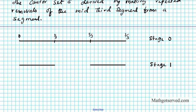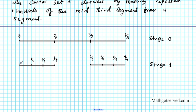Now to get stage 2, we're going to remove the middle third of the segments we got from stage 1. Each segment is 9 units long, so I break it into thirds and remove the middle third. Looking at this, we can identify positions at one-ninth, two-ninths, three-ninths (which is one-third), six-ninths, seven-ninths, eight-ninths, and nine-ninths (which is 3 over 3). Taking out the middle third gives us stage 2 of the counter set.